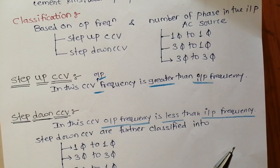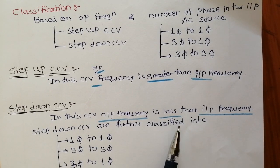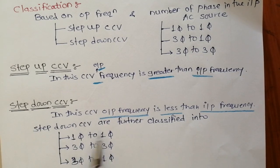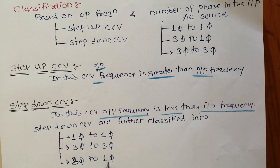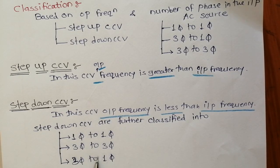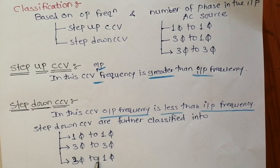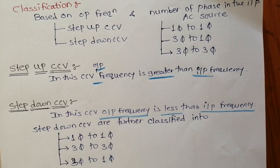The step-down cycloconverter has an output frequency less than the input frequency and is further classified into single-phase to single-phase, three-phase to three-phase, and three-phase to single-phase types. Step-down cycloconverters are used in all practical applications — they are easy to build and operate, low cost, and have wide applications. This concludes the basics of cycloconverters.